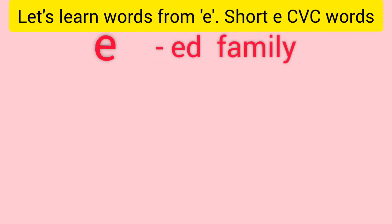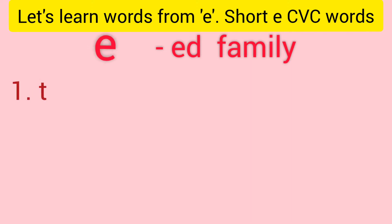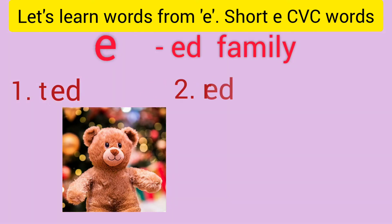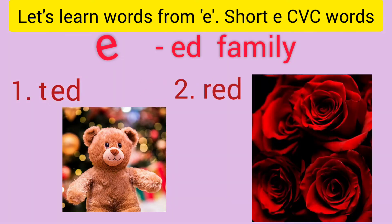Now let's learn the words from the vowel E. Short E CVC words. ET family words. Number one is T-E-D: tent. Number two is R-E-D: red. Look at these red colored flowers.